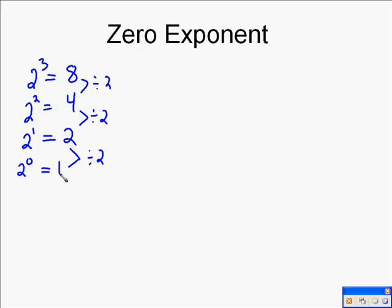You can look at the same thing from the 3s. 3 to the 3rd is 27. 3 to the 2nd is 9. 3 to the 1st is 3.